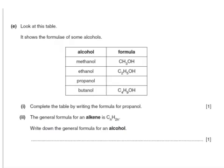Look at this table. It shows the formulae of some alcohols. Now you have to learn the formulae of five alcohols: methanol, ethanol, propanol, butanol, and pentanol. So the one for propanol, which is in the right order in the table, would be C3H7OH because it will have one more carbon and two more hydrogens. And then the general formula for an alkene is CnH2N. Write down the general formula for an alcohol. Even if you haven't learned it, you can work it out from above. The number of carbons would be N. The number of hydrogens next will be 2N plus 1 and then an OH on the end.